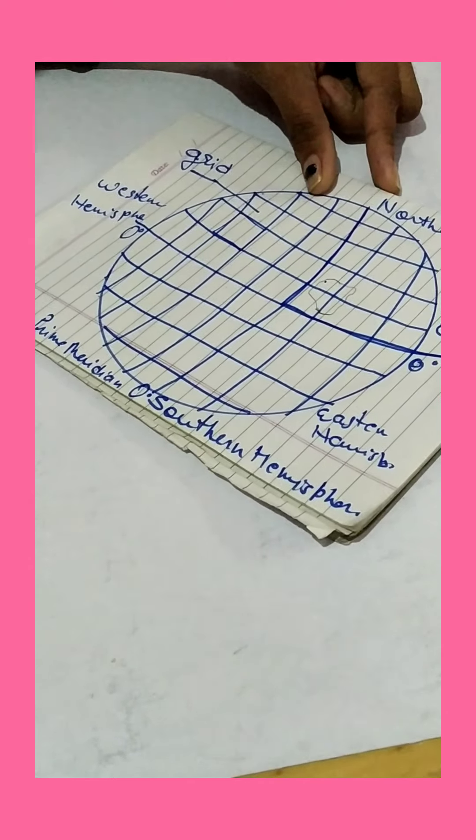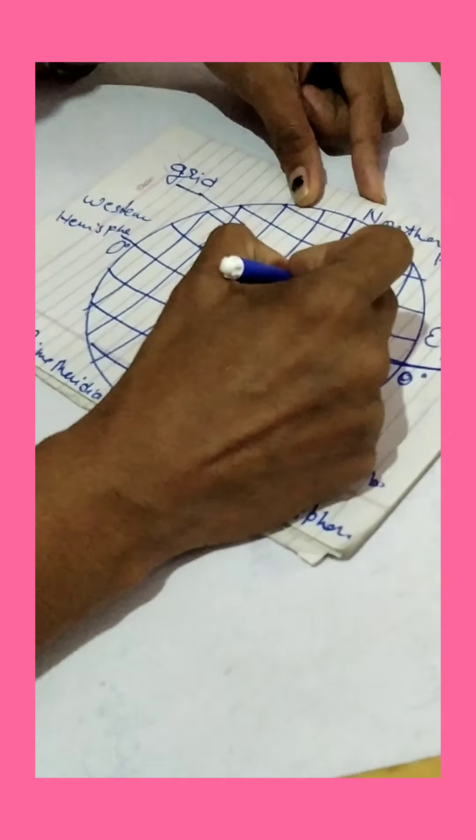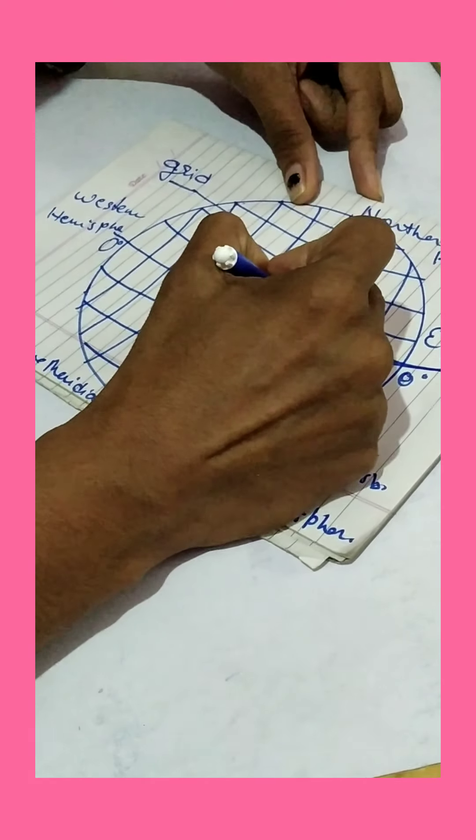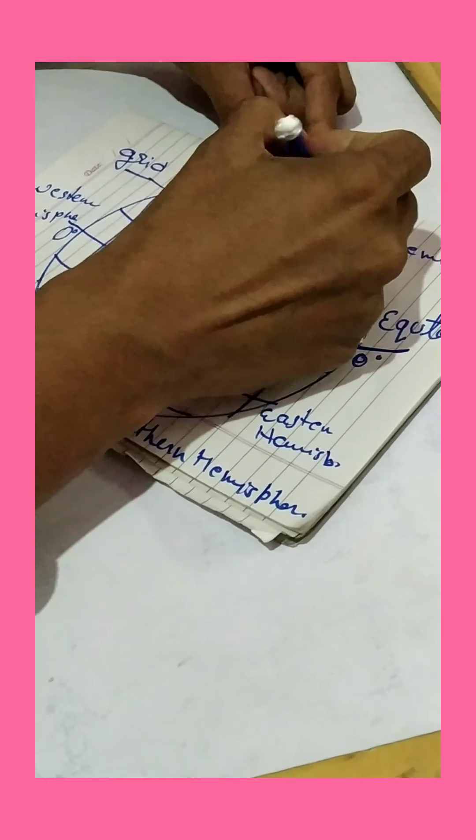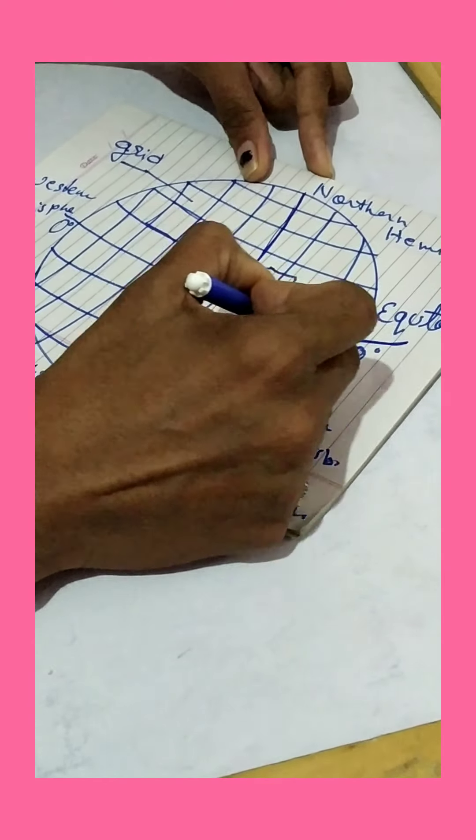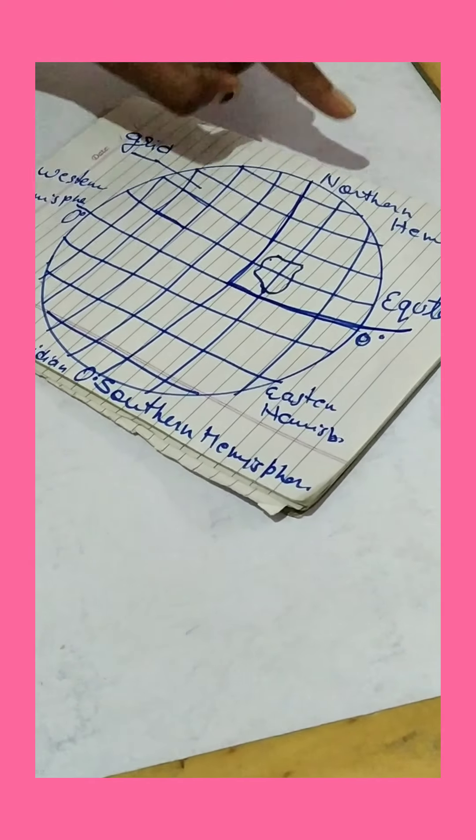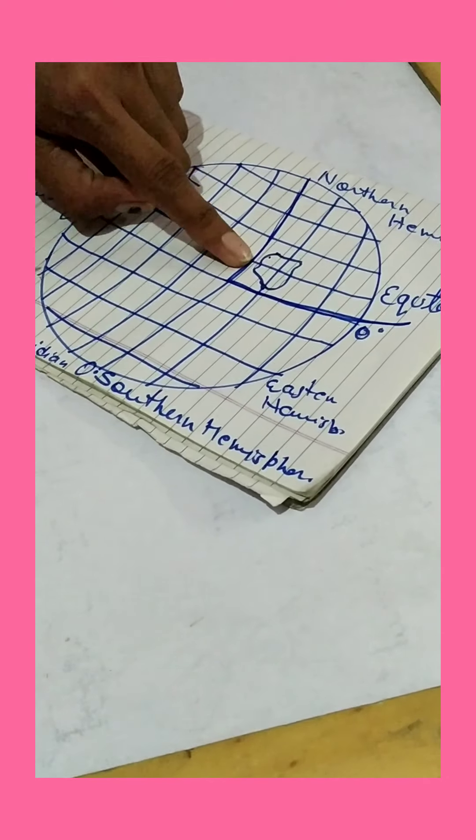Now, where does India locate? In this location our India lies. We can see that in the northeast, it means northern and eastern hemisphere, India lies.